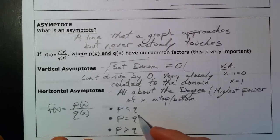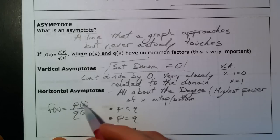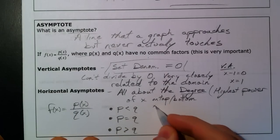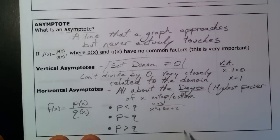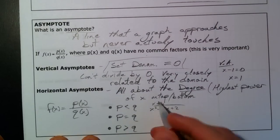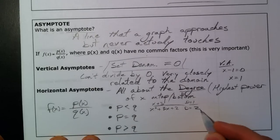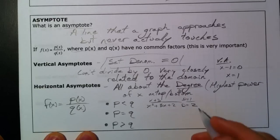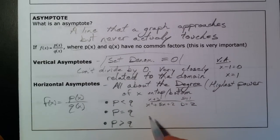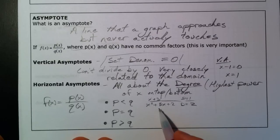And so, we have, if p is less than q, if the degree on top is less than the degree on the bottom, say, x plus 3 over x squared plus 3x plus 2. The degree on top is just 1. The degree on the bottom is 2. And so, p is less than q. The bottom is going to get bigger, much faster.